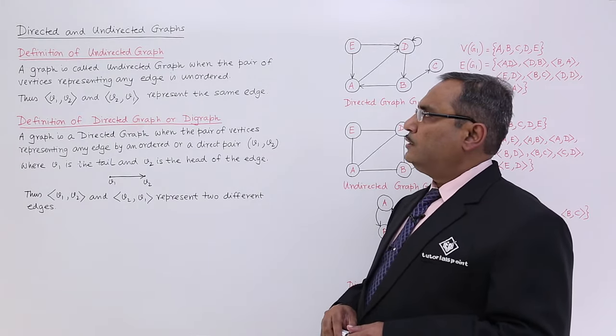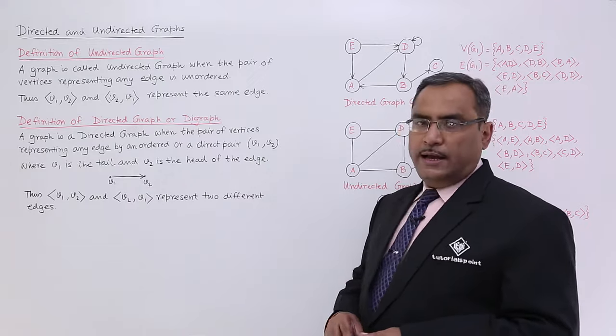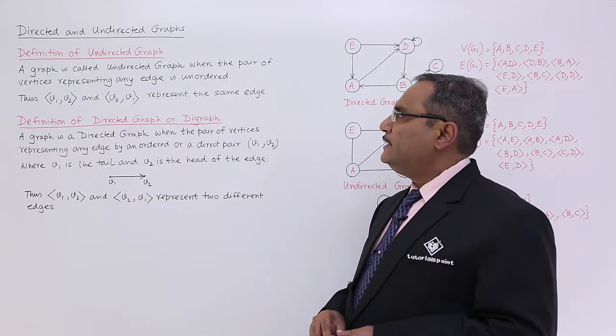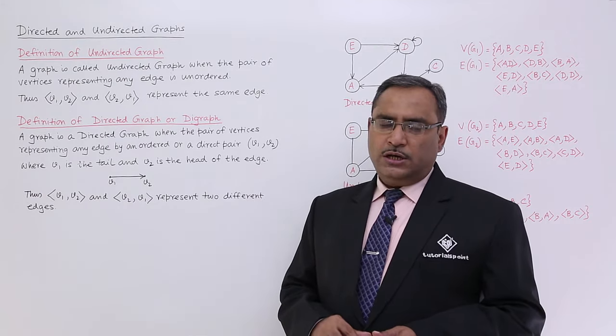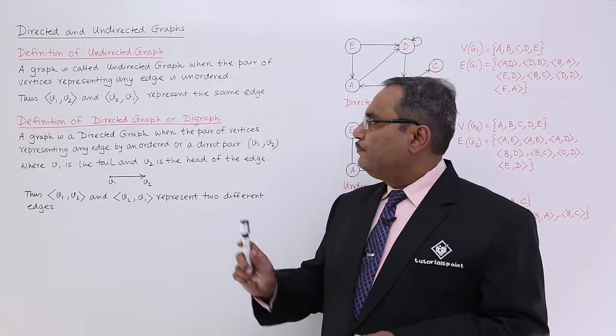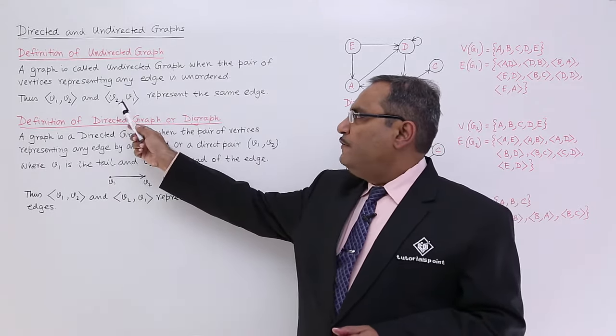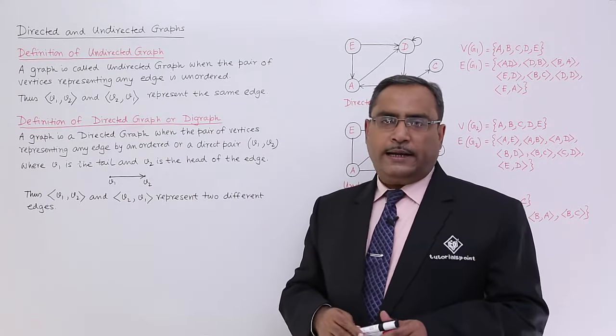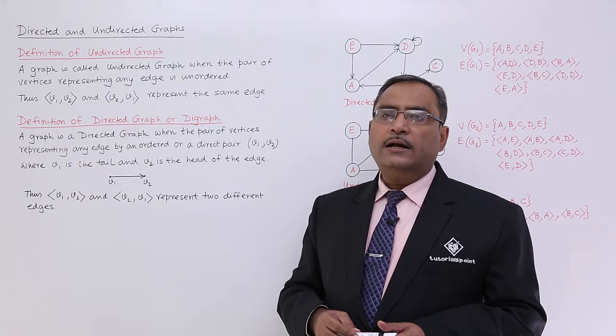A graph is called undirected graph when the pair of vertices representing any edge is unordered. That means, let us suppose there is a particular edge which is connecting vertex V1 and V2. Then V1 V2 and V2 V1 both will represent the same edge and then the graph will be known as the undirected graph.